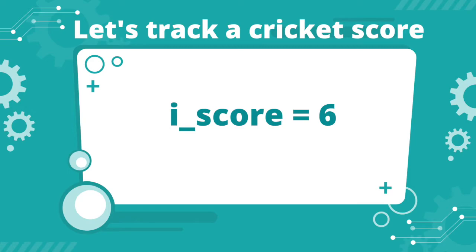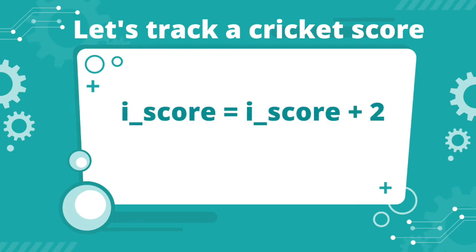Now if six is scored in the cricket match, the score will be i_score equal to six. Now that's easy. But now I scored two more, and then another two, or maybe one, and the cricket match is really long. So it's really simple if I just add it to whatever value is in i_score. So here we say i_score equal to i_score plus two.